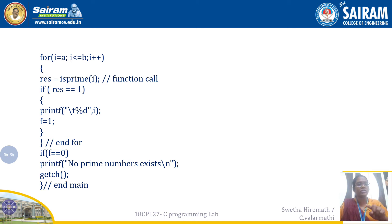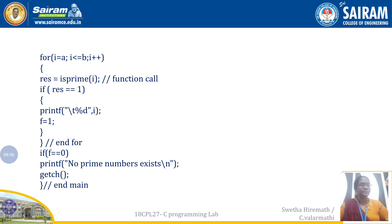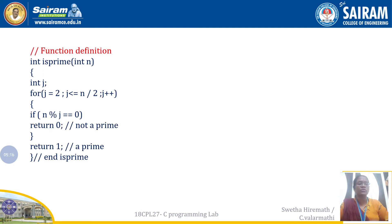I call the function isPrime, which will return whether the number is prime. The return value is stored in 'result'. If result equals 1, the number is prime. There is also a condition where if the number is 1, it is treated as a prime number. This is the main logic of the program.